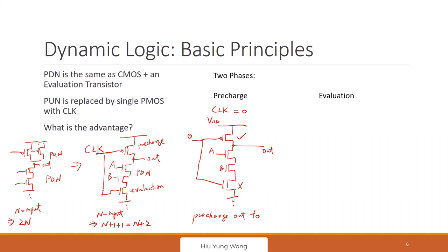Since the pre-charge transistor is on and the evaluation transistor is off, the output is VDD. So every circuit goes through a pre-charge phase where the output is charged up to VDD — this is not the correct logic yet, just the pre-charge state.